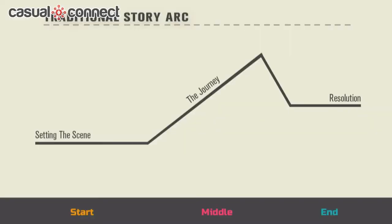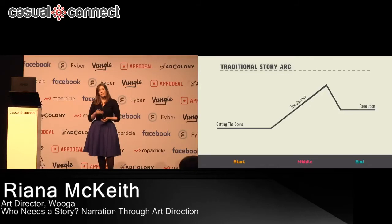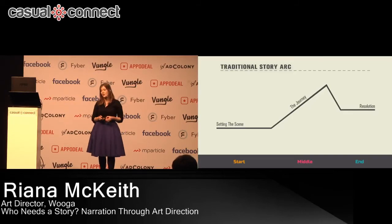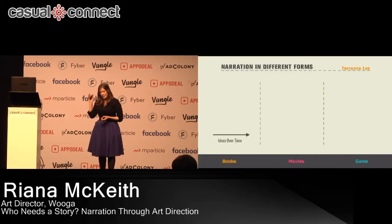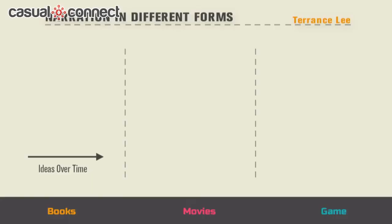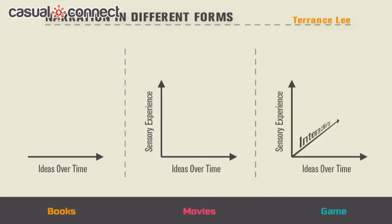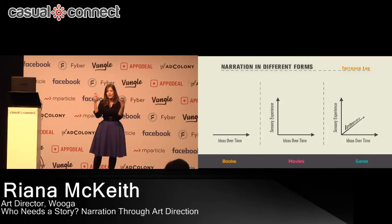The narration of Donkey Kong follows this pattern: set the scene, an inciting incident, go on a journey, then resolution at the end. But in a game that may last two or three years, you won't have the opportunity for resolution, so you have to think about story in the context of the media you're creating. Narration takes different forms — in a book, text on a page; in film, a whole new range of storytelling tools: sensory experiences, audio, costumes, editing. And in games, you have this whole new dimension — interactivity. Players are making choices, and that builds a world and a story unique to them.